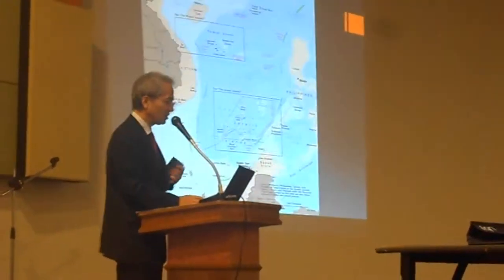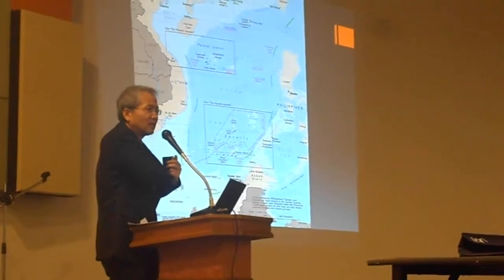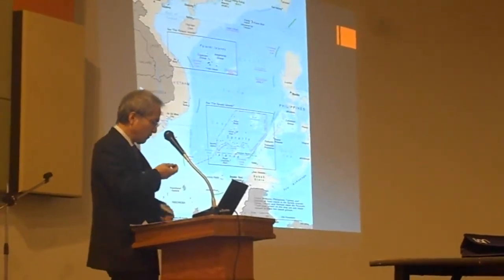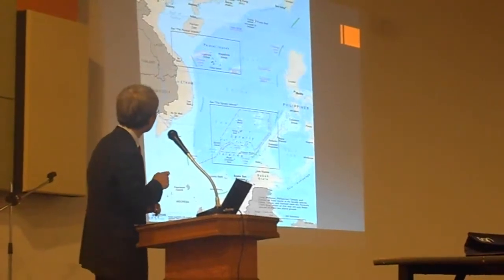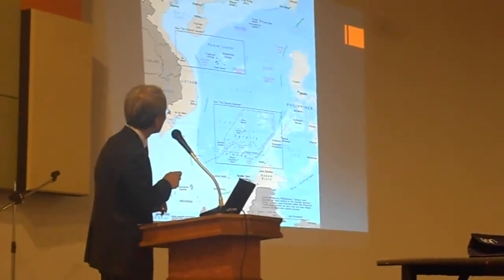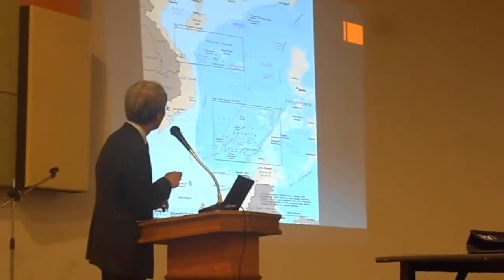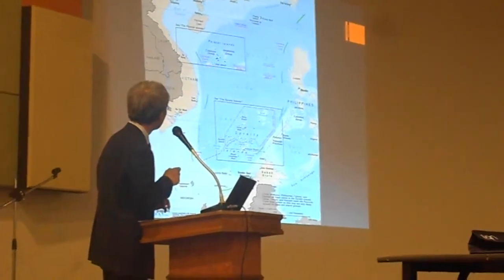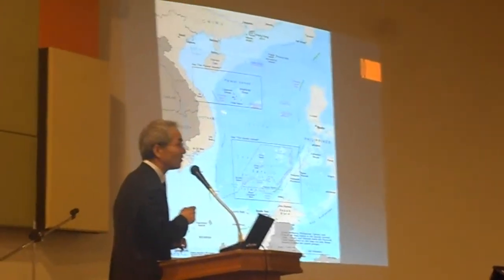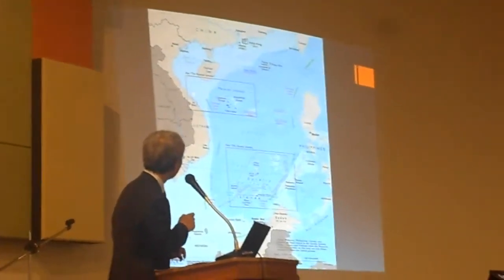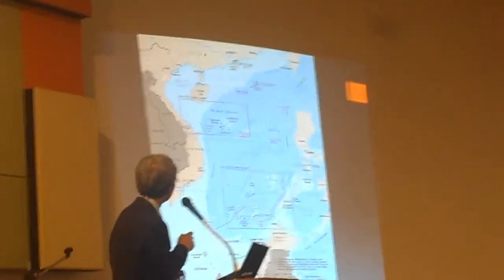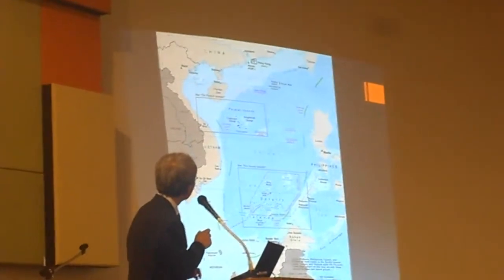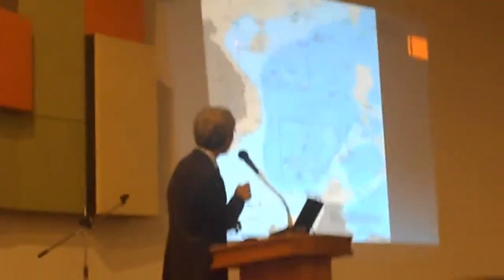This slide shows the very famous so-called 9-dash line — previously it was the 11-dash line, but now two dashes have disappeared. The Gulf of Tonkin demarcation of the sea has already been settled, and that part of the line has been removed.